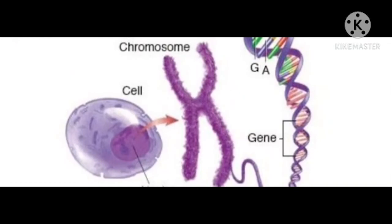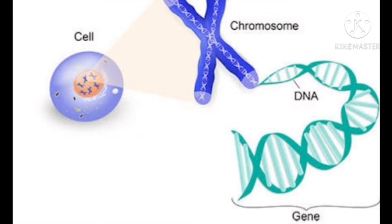Chromosomes carry genes and help in inheritance — the transfer of characters from parents to offspring. The chromosomes can be seen only when the cell divides. To recap: the nucleus is separated from the cytoplasm by the nuclear membrane; inside the nucleus there is a dense spherical body called the nucleolus; and the nucleus contains chromosomes which carry genes helping in inheritance or transfer of characters from parents to offspring. That is why we resemble our parents.